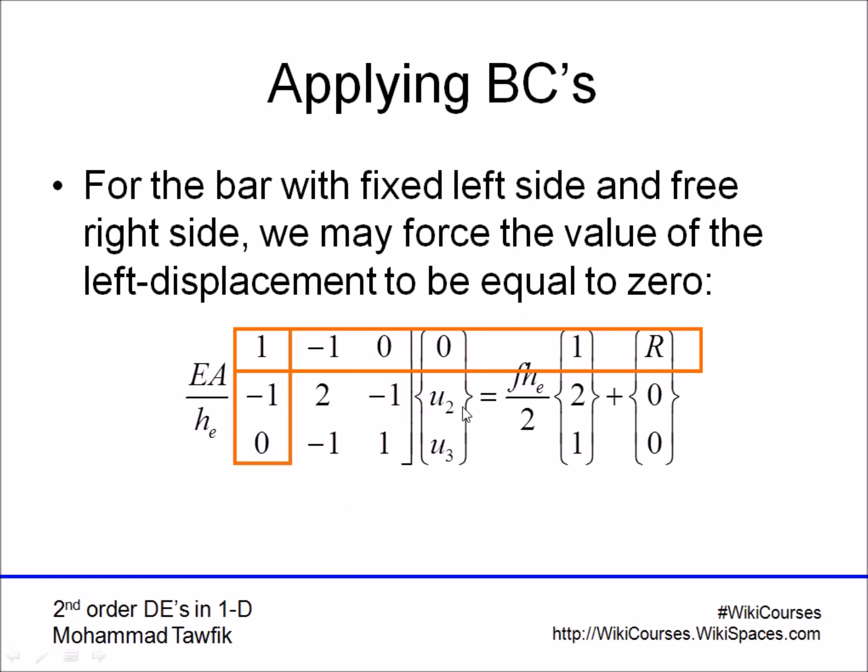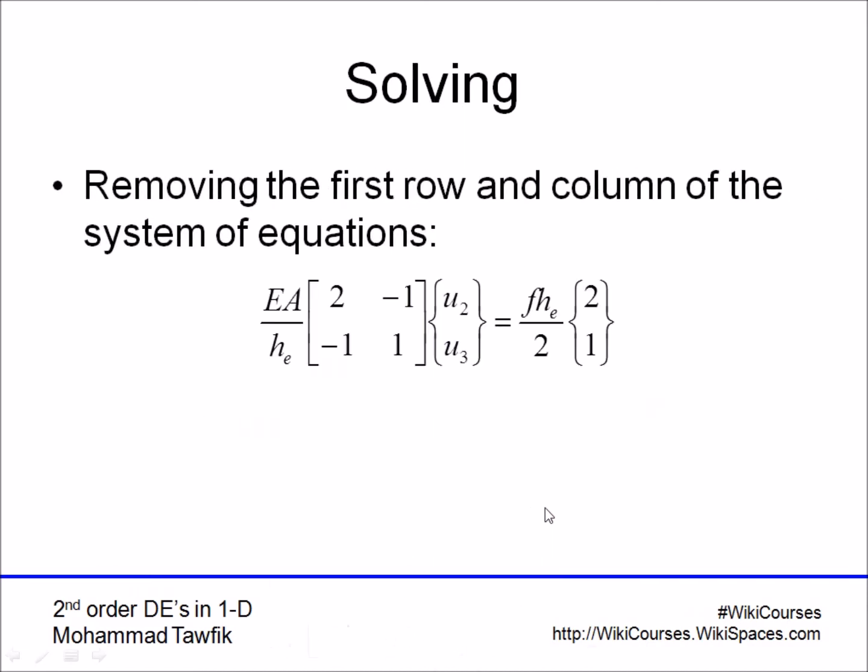If you solve them, you'll get values for u2 and u3 that you can substitute back into the first equation and get R. The simple procedure is that we remove the first column—it's multiplied by zeros—and remove the first row or equation and handle it separately later. We end up with a system of equations that can be solved for u2 and u3.